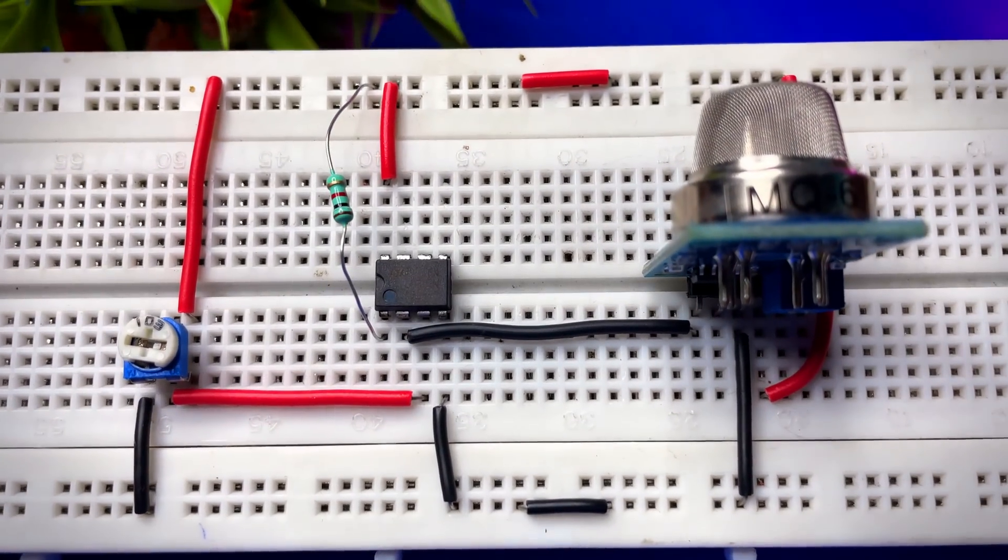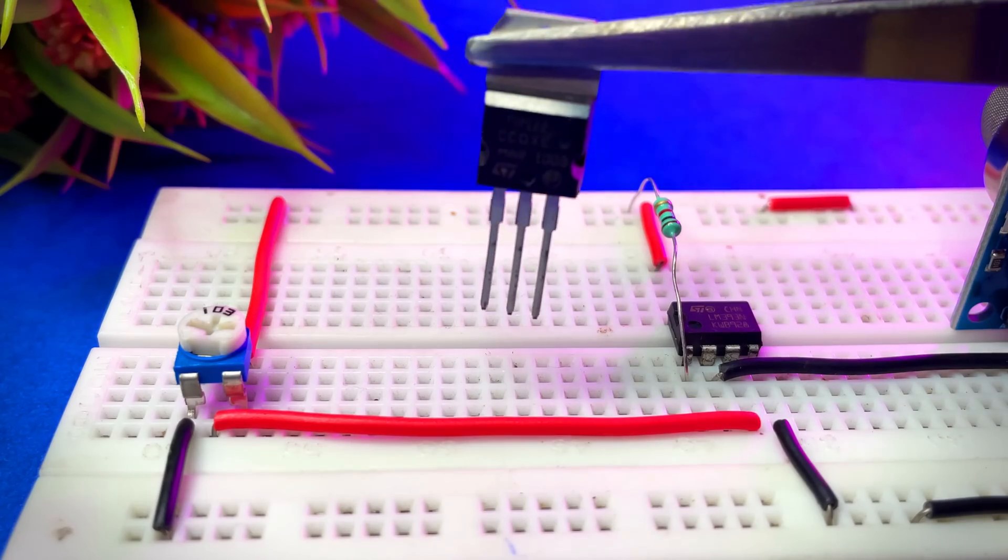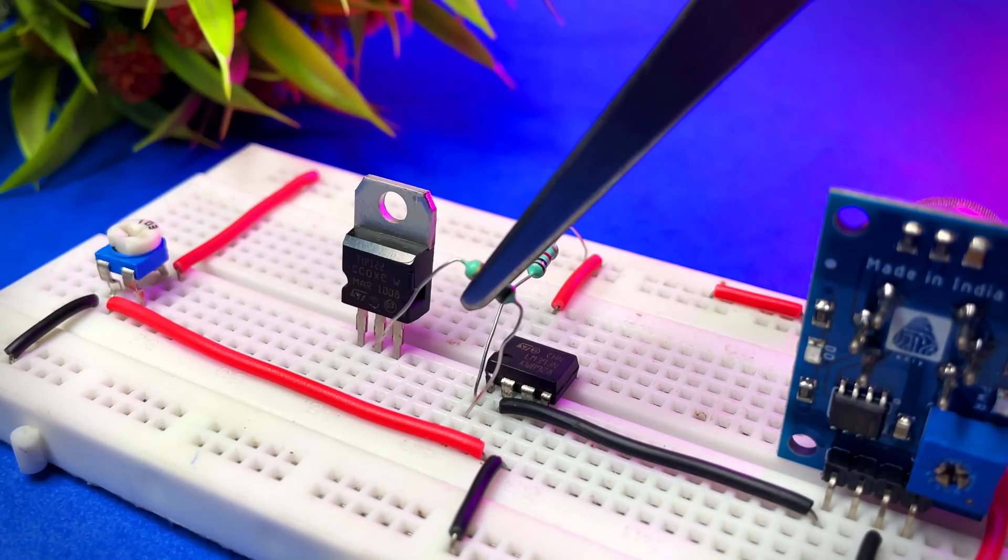To fix this problem we need a 1k pull-up resistor whose one pin connected to output of LM393 and another pin to VCC. So I am using this transistor as a switch.